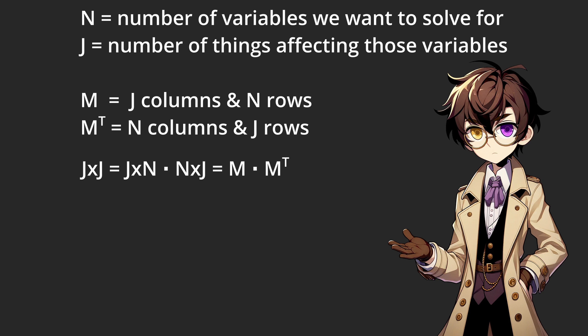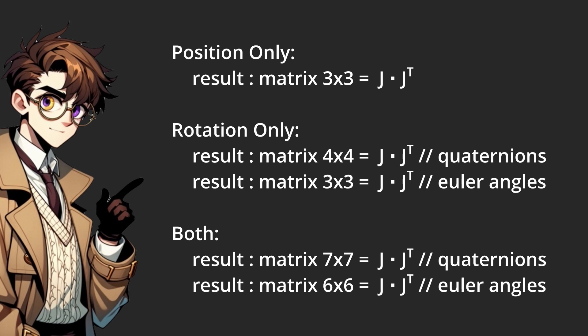So for example if we're only concerned about position of the effector, the result will be a matrix that is 3x3. And if we want rotation it will be a 4x4 matrix for quaternions or 3x3 for Euler angles. And if we want total orientation it will be a mat7 or mat6.